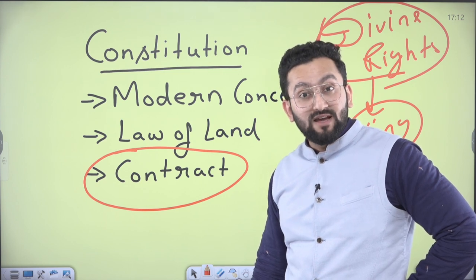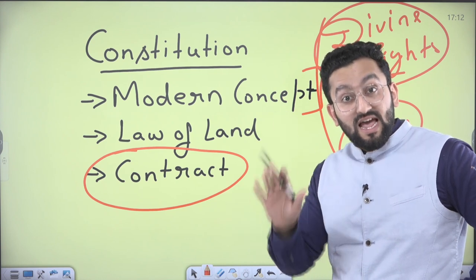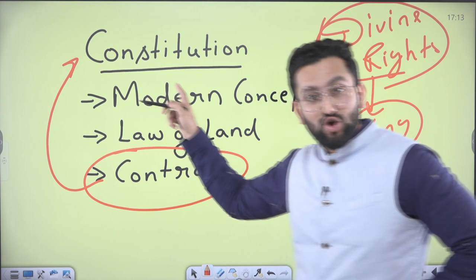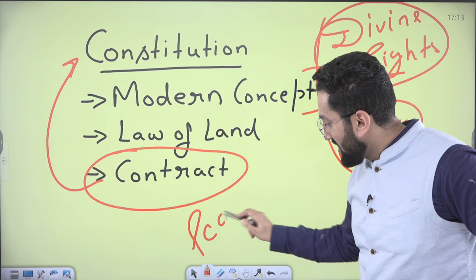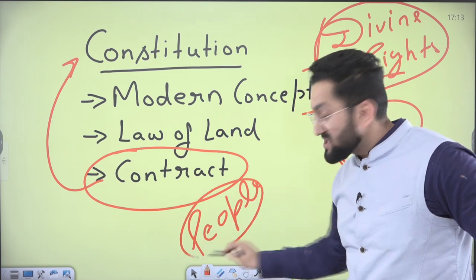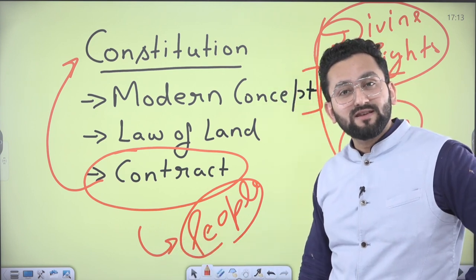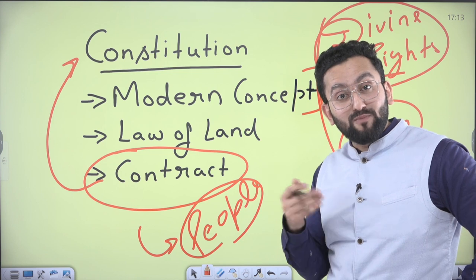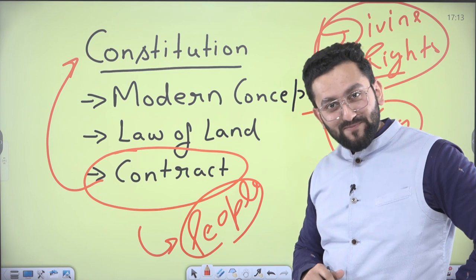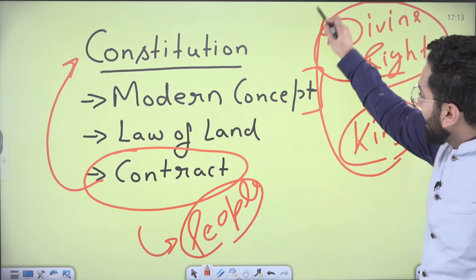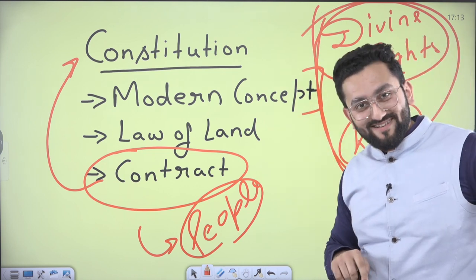These basic rules are going to be mentioned in the constitution, and who is deciding them? The people. So it means the source of power is the people. That is why in our Preamble, the first line is: 'We the people of India give ourselves this constitution.' This idea is actually solving the problem which was prevalent in the medieval period.